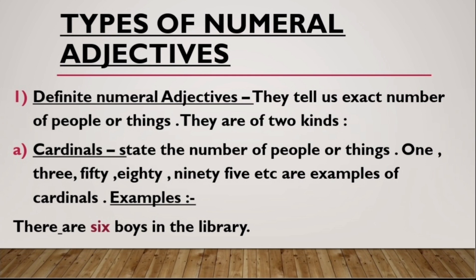Cardinals state the exact number of people or things — for example: one, three, fifty, eighty, sixty-nine, fifty-four, ninety-five, etc. For example: 'There are six boys in the library.' How many boys are there in the library? Six. So it is referring to a countable noun — boys — which you can count.